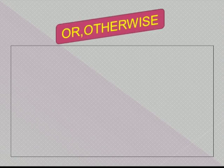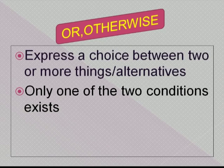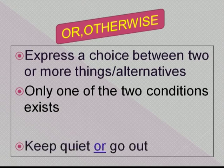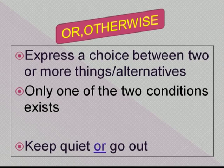The next connectors are 'or' and 'otherwise'. These connectors express a choice between two or more things or alternatives — only one of the two conditions exists. Example: 'Keep quiet or go out.' You have to select one option. You should keep quiet, or you may go out of the class.